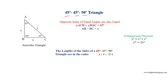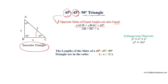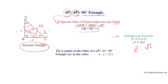A 45-45-90 degree triangle has two equal angles, and we know that sides opposite equal angles are also equal, making this an isosceles triangle. Angle ACB equals angle BAC equals 45 degrees, so the sides opposite the 45-degree angles are equal: AB equals BC equals X. The hypotenuse AC equals Y, and applying the Pythagorean theorem gives Y equals √2 multiplied by X.